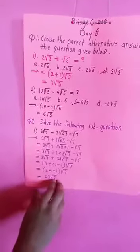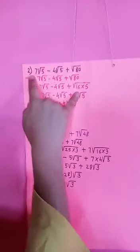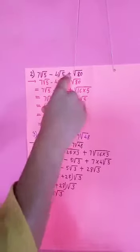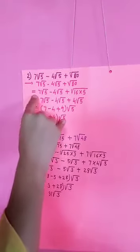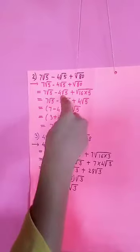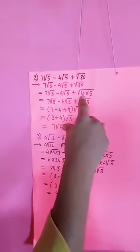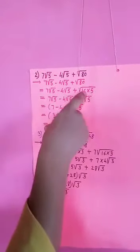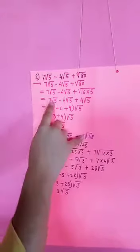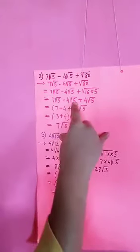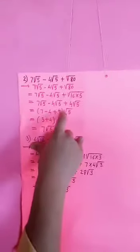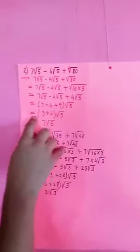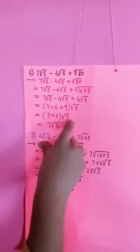Sub-question 2: 7 cube root 5 minus 4 cube root 5 plus cube root 80. Working: cube root 80 equals cube root (16 × 5) equals 4 cube root 5. So the expression becomes (7 - 4 + 4) cube root 5, and the answer is 3 plus 4 cube root 5.